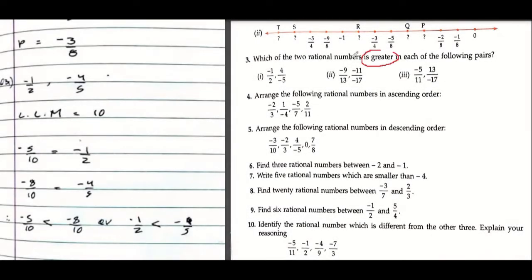Which of the two rational numbers is greater in each of the following pairs? There are two methods for doing this question, so I will discuss both of them. The first method you have done clearly—you have to make the denominator the same by taking LCM.